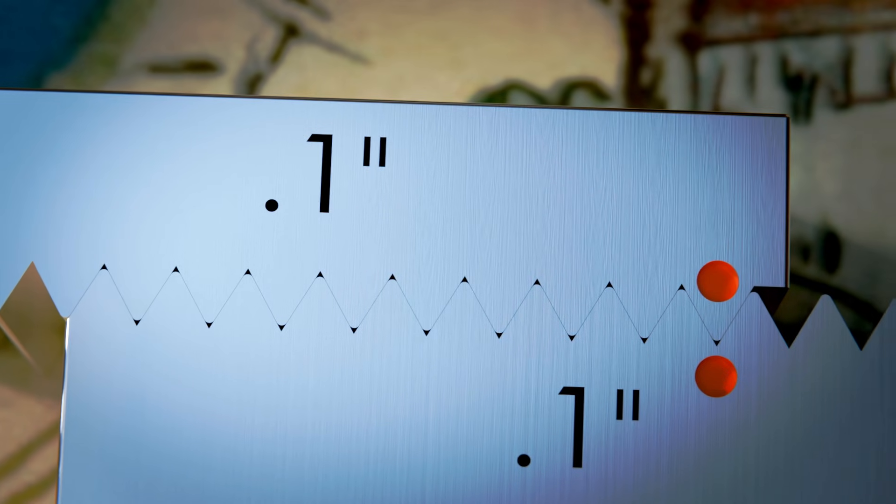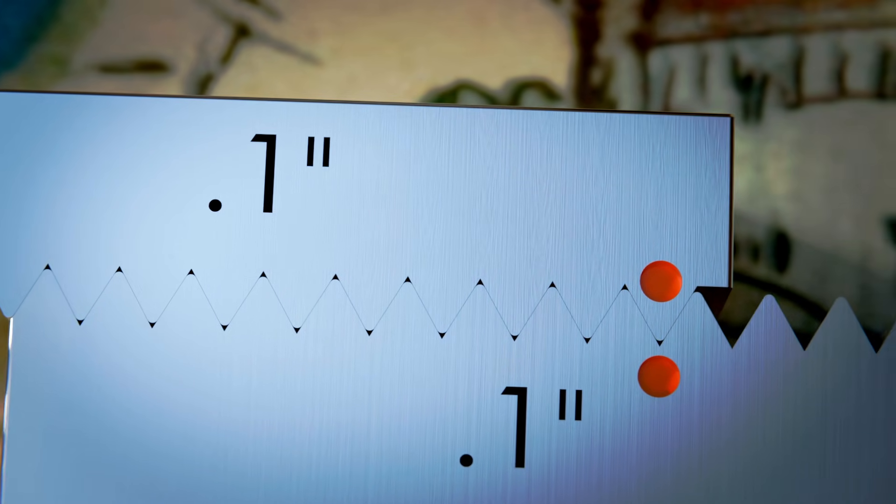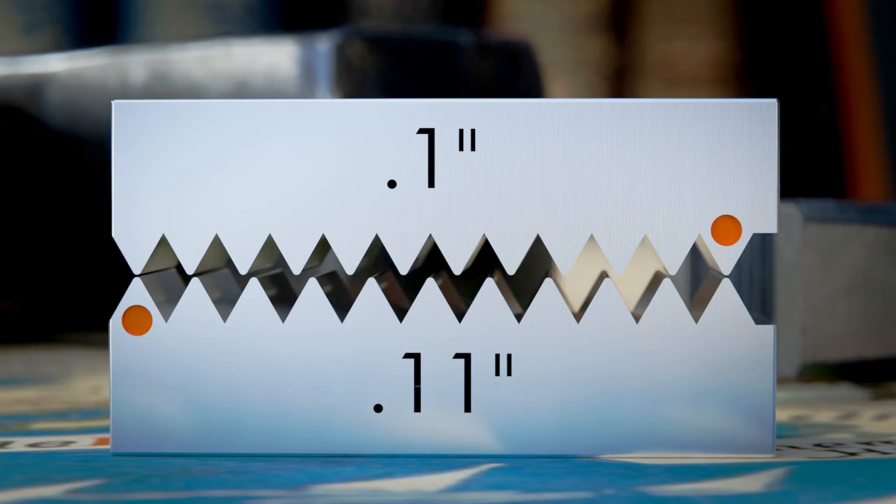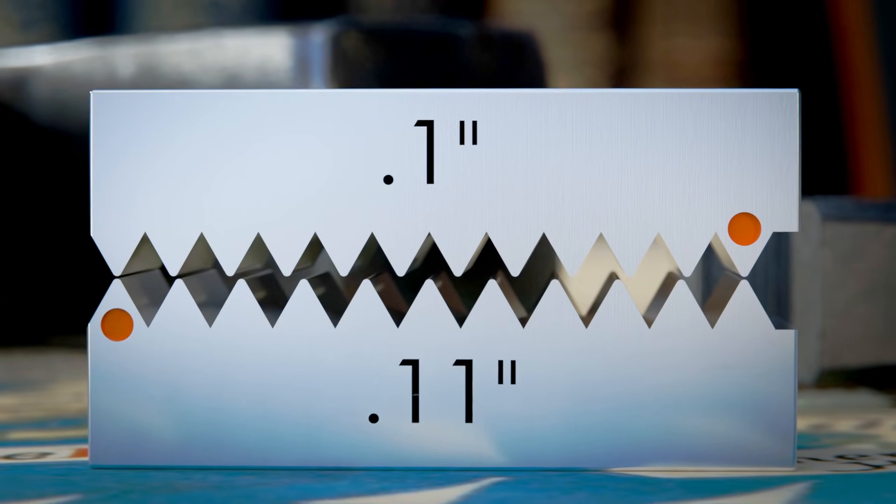So one side of this block has teeth which move in a hundred thousandths increments. On the other side, we'll make teeth that are a hundred and ten thousandths. They look very similar, but they're just a tiny bit different, just ten thousandths of an inch.